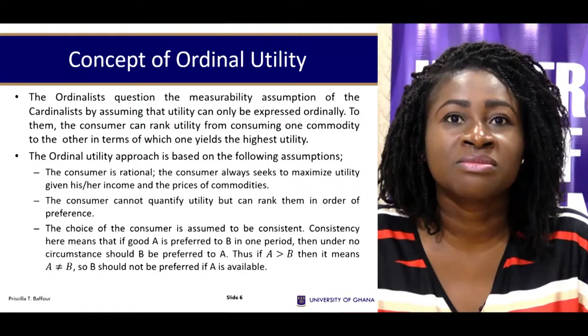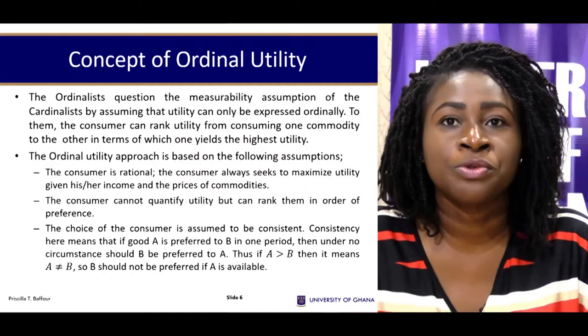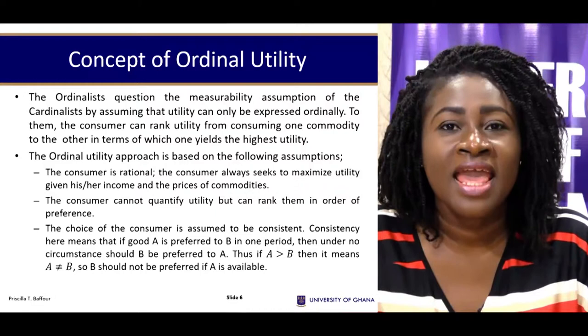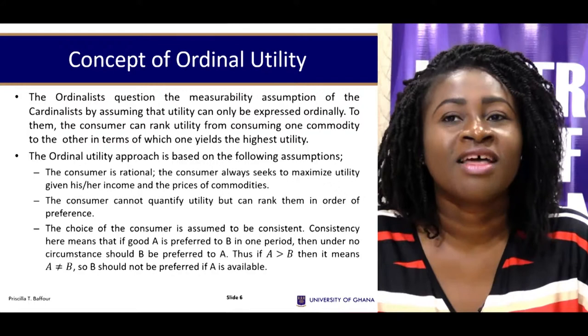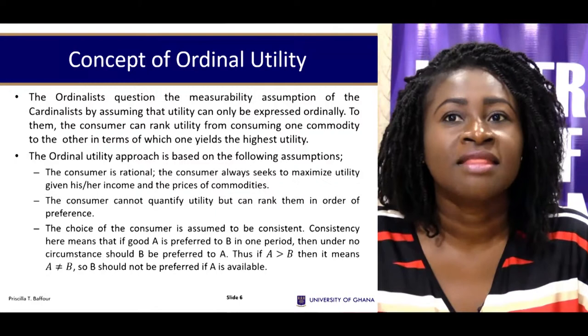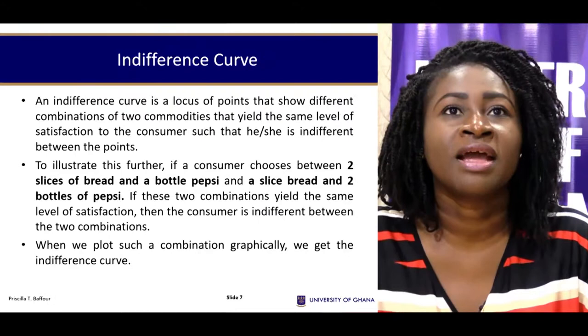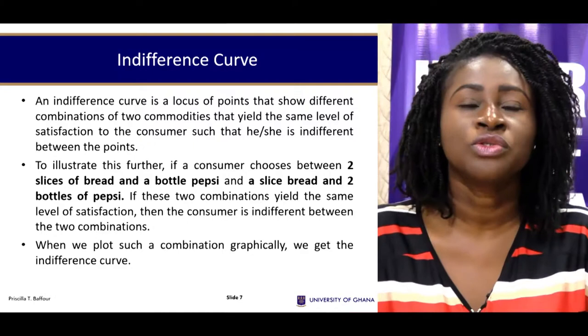Closely related to consistency is the assumption of transitivity, which means that based on consistent choices we can predict consumer behavior. With transitivity, if A is preferred to B and B is preferred to C, then under no circumstance would the consumer prefer C over A — meaning A is preferred to C. The consumer is behaving consistently and we can predict behavior based on the pattern we observe.